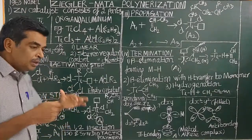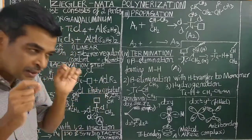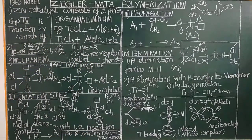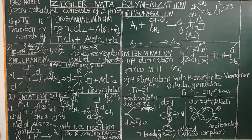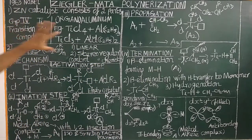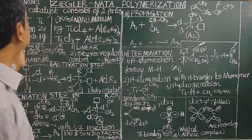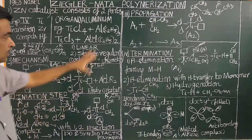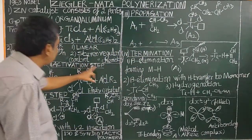In contrast, free radical polymerization does not give stereoregular polymers. Because of this discovery of stereoregular polymers, both Ziegler and Natta were jointly awarded the Nobel Prize in Chemistry in 1963.